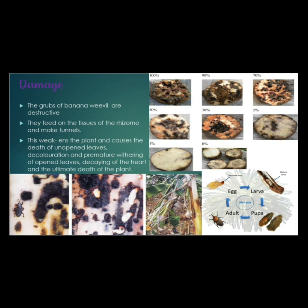The grubs and weevils are destructive, eating the cells of the rhizomes and creating tunnels which weaken the plant, causing the death of unopened leaves, premature withering of open leaves, and ultimately the death of the plant from heart rot.